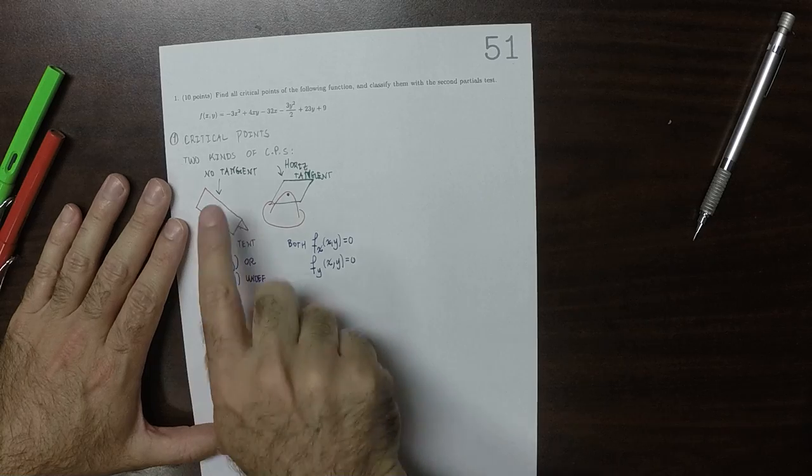So this one means, this kind of critical point, they both have to do with tangency. This critical point is saying that there's no tangent, and this type of critical point is saying that there's a horizontal tangent. In either case, they have to do with the partials. So let's compute the partials.